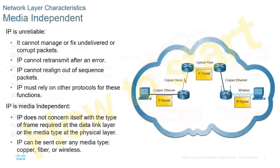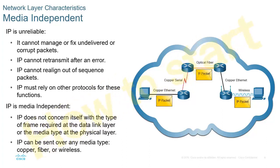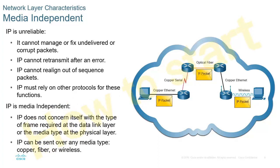What does it mean by media independent or layer 2 independent? It doesn't mean that it has to use the same media across the network. It can use different types of layer 2 technologies for transporting data and different layer 1 technologies for the actual physical connections. Layer 3, as it takes the packet, will give the packet to a frame, and the frame deals with the connectivity from there. IP packets don't care how they get there — that's not its role.